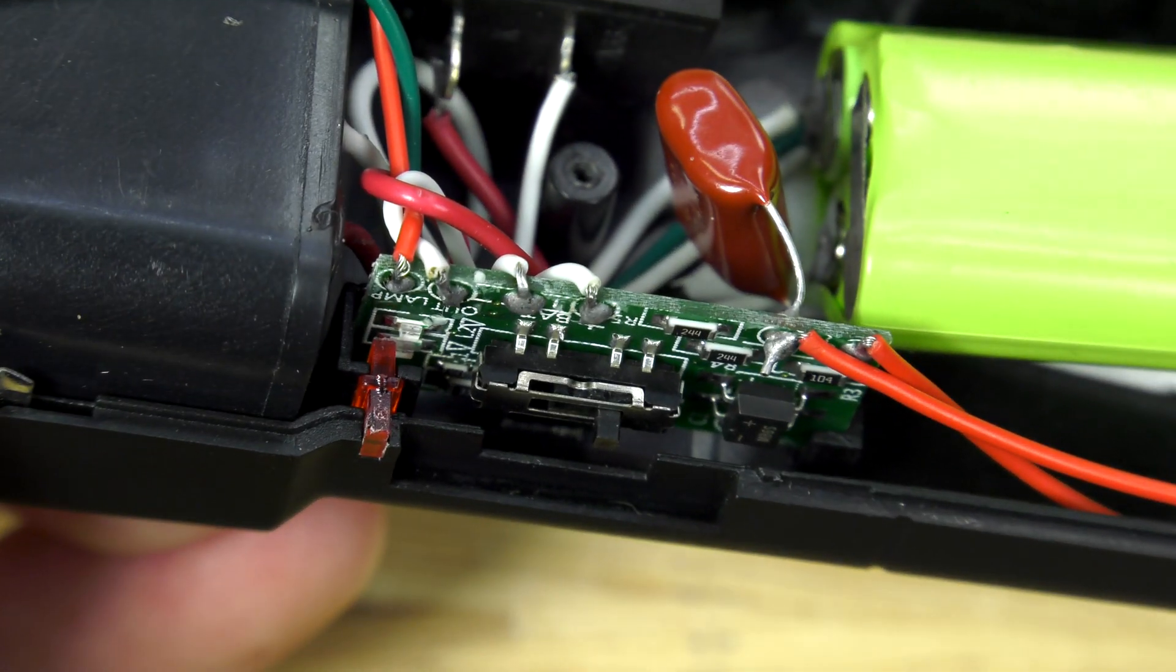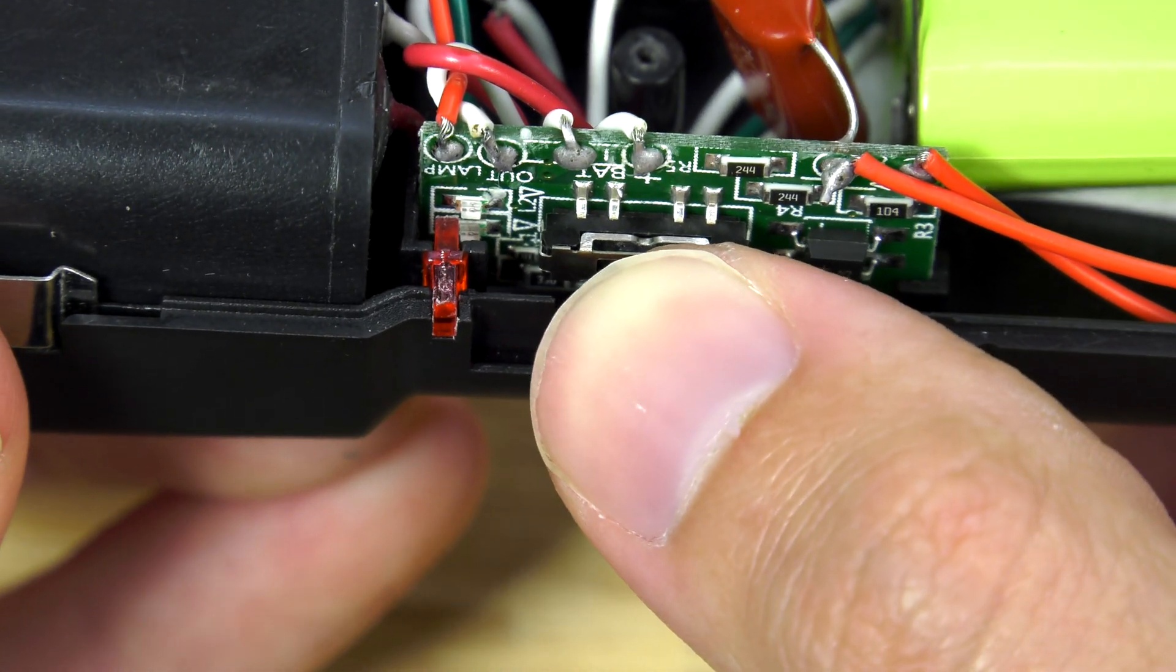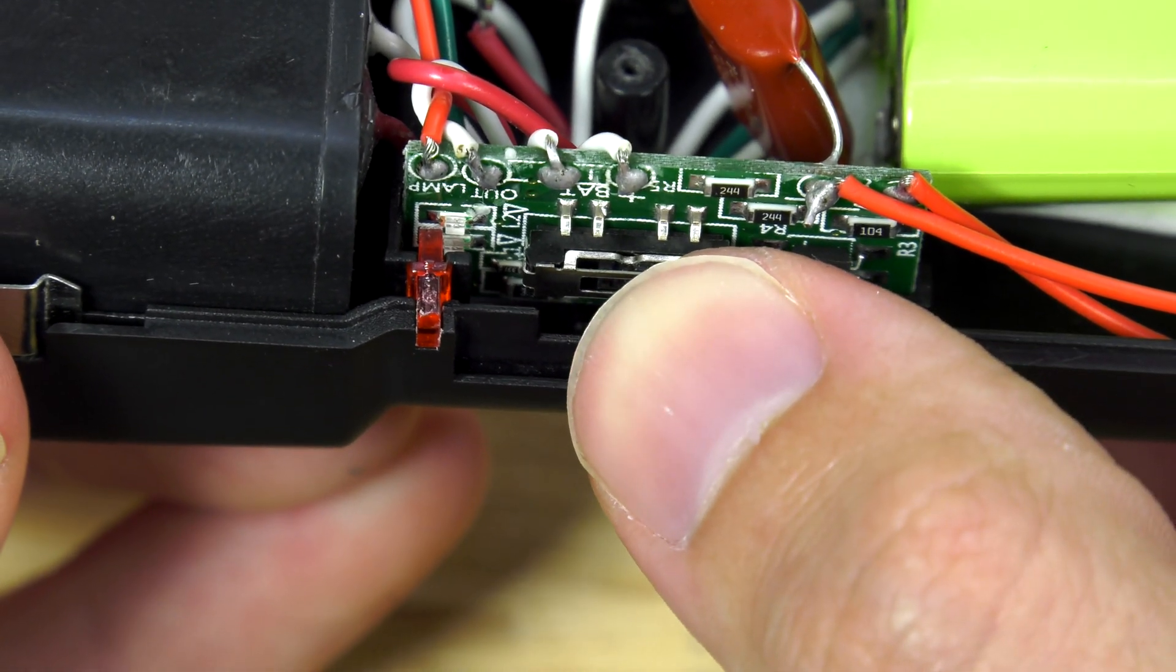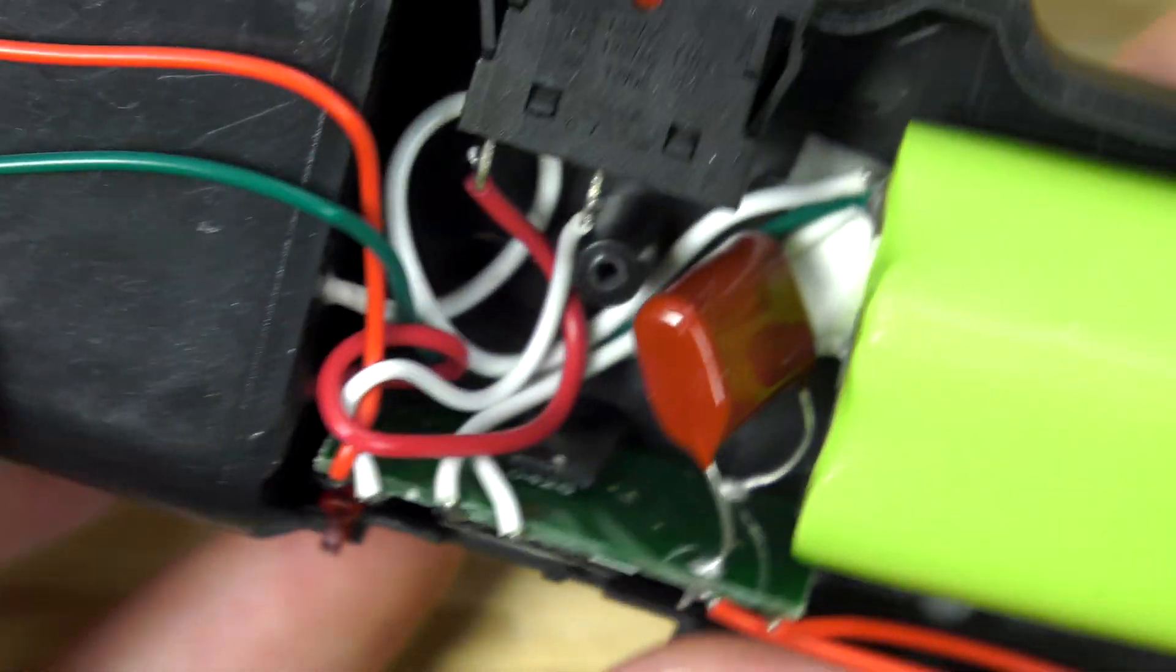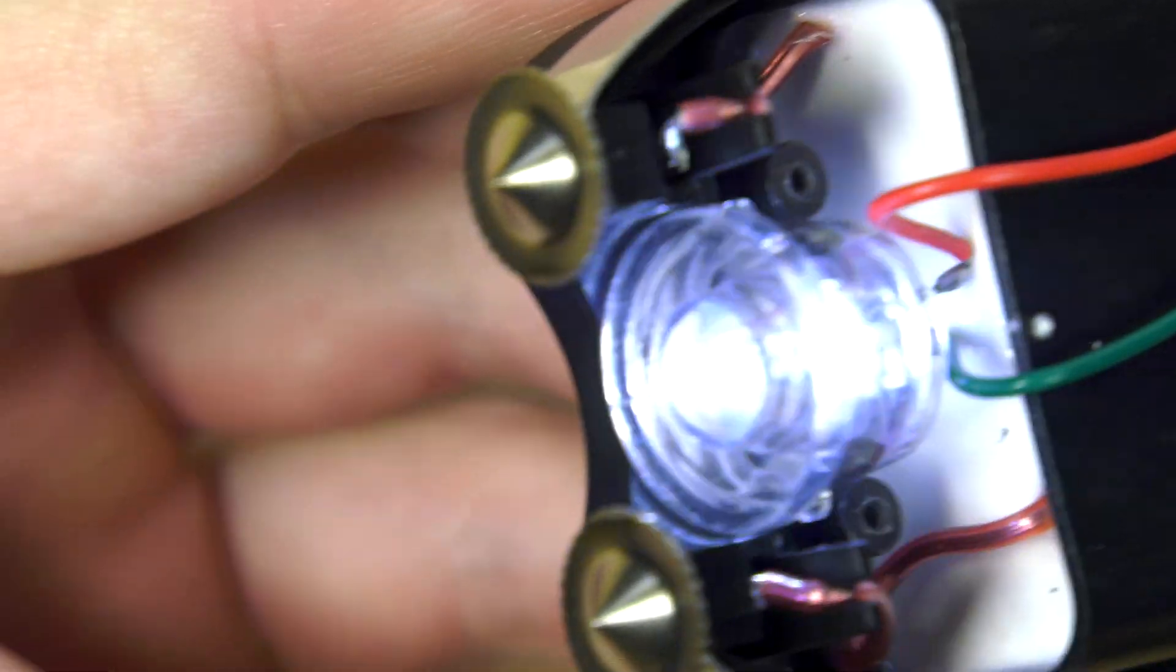So when it's in the middle position you'll turn the flashlight on, far up position is red for armed, and bottom is off. So you'll see the flashlight come on here in a second and that's like the safety position to let you know you're about to arm the taser.